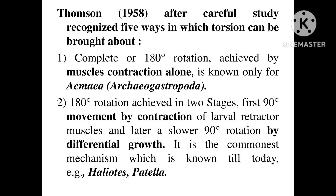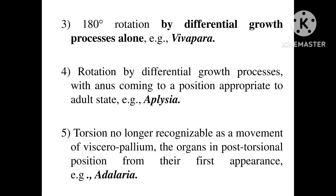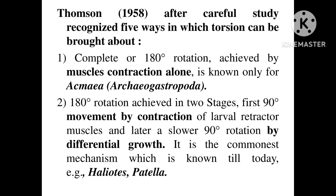The third way is 180-degree rotation by differential growth processes alone — not by muscle contraction and not by retractor muscles. The entire 180-degree rotation happens only through differential growth, and this takes place in Vivipara. To summarize: way one is by retractor muscle contraction alone (Acmaea); way two is 90 degrees by muscle contraction plus 90 degrees by differential growth (Haliotis, Patella); way three is complete 180 degrees by differential growth alone (Vivipara).